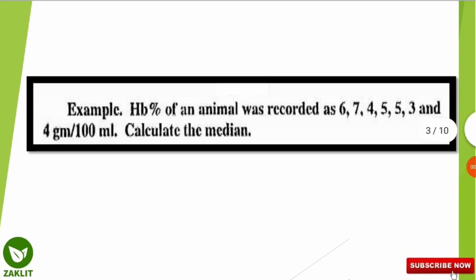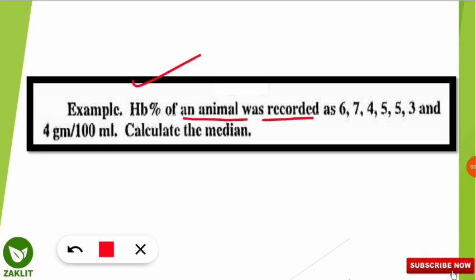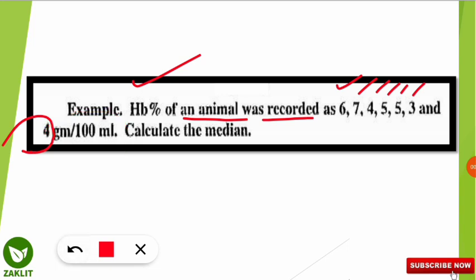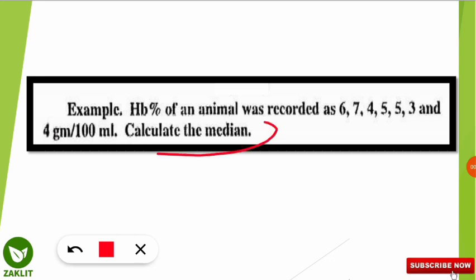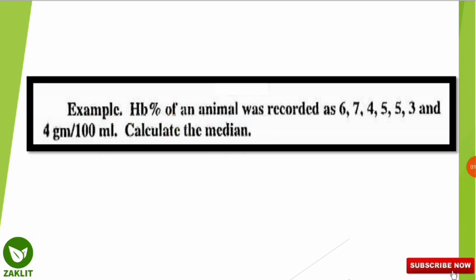We'll start with a very simple and basic question that already came in the NET paper. The question is: the hemoglobin percentage of an animal was recorded as 6, 7, 4, 5, 5, 3, and 4 grams per 100 ml. We have to calculate the median of this hemoglobin data.